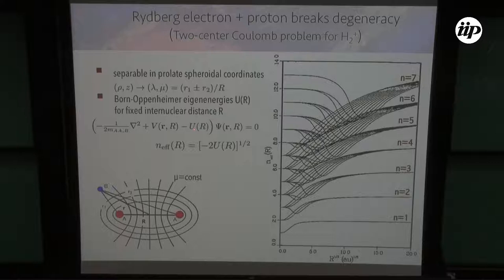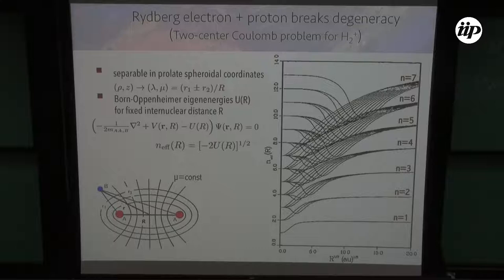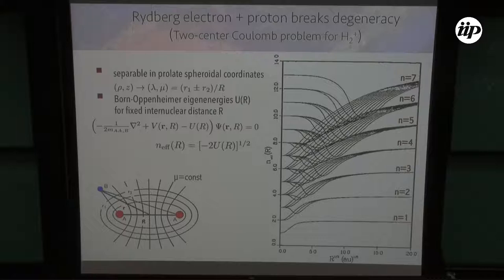Here you see all these eigenpotentials U(R), up to excitation of the Rydberg electron to the seventh manifold. You see that if you go to the united atom limit, everything is degenerate — it's spherical, like helium with double charge. And asymptotically when you take one particle away, you end up with hydrogen and high degeneracy again. But in between you have a Stark effect and high polarizability, so these manifolds dive into each other — which would give rise to a lot of chaos.